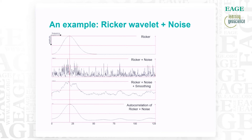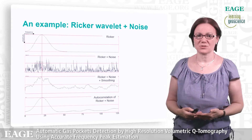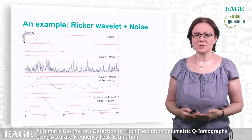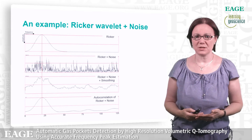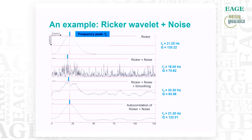We can notice that the spectrum is very similar. Even applying smoothing to the spectrum of the noisy Ricker, we struggle to get a closer spectrum. Computing the frequency peak and the associated Q value, we can observe that using the autocorrelation, we can better retrieve the real Q value of 120 in this example.